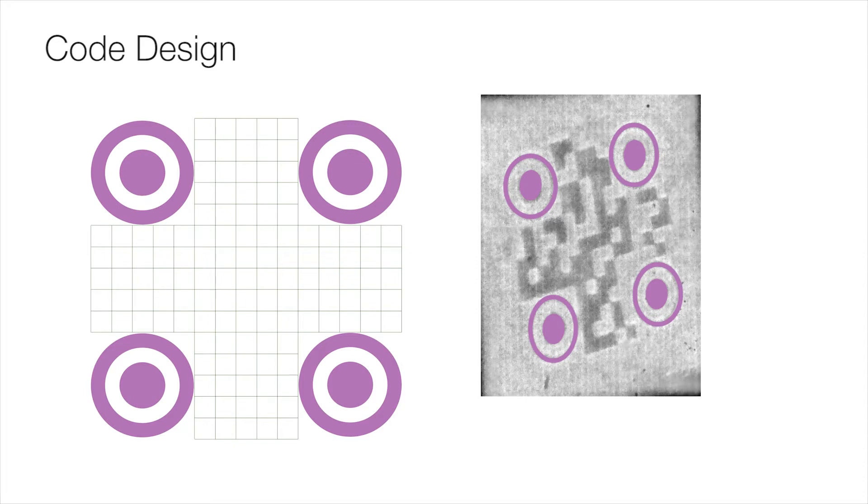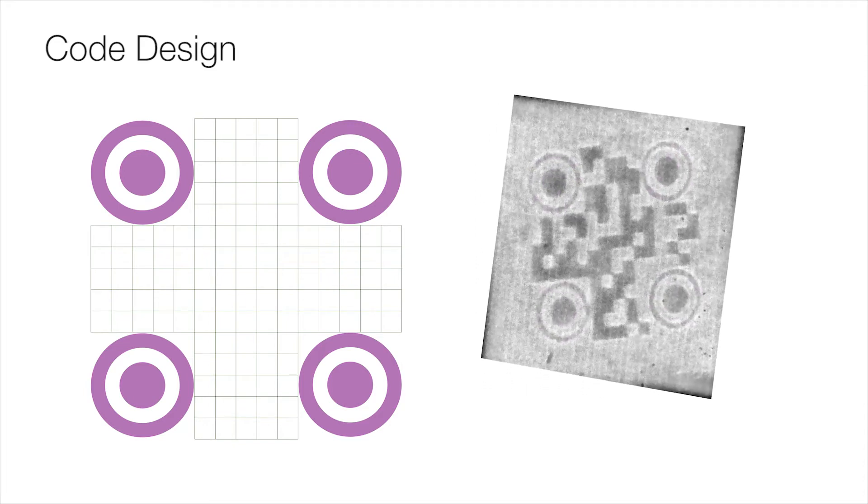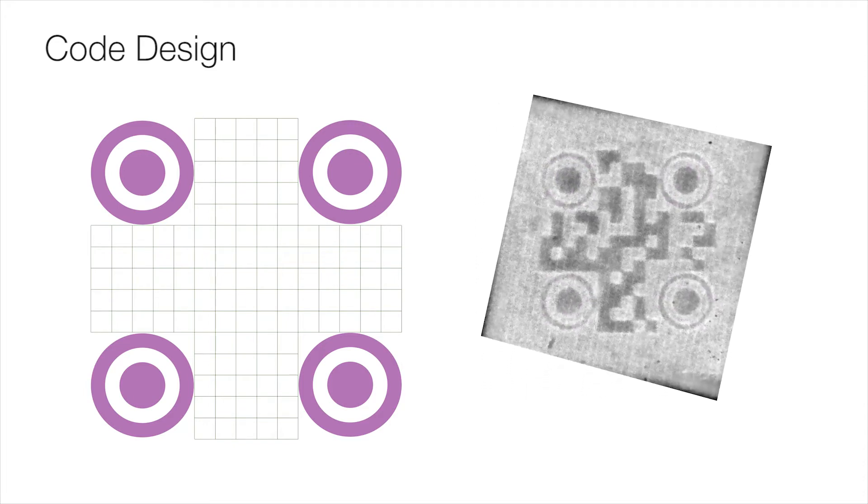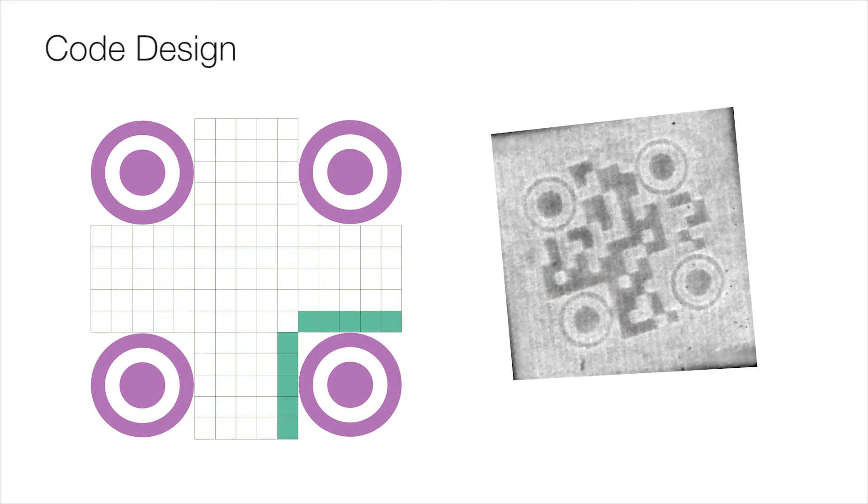Once we locate four markers, we apply a four-point perspective correction to rectify the image. To uniquely determine the code orientation, we identify the bottom right marker by placing air pockets around it.